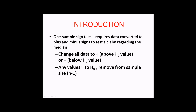Introduction: the one-sample sign test requires data converted to plus and minus signs to test a claim regarding the median. We change all data to a plus sign when the data are above the hypothesized value, or change the data to a minus sign when the data are below the hypothesized value. For any values equal to the hypothesized value, we remove the data from the sample size.